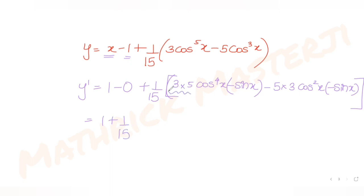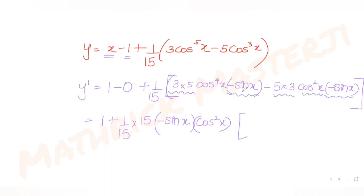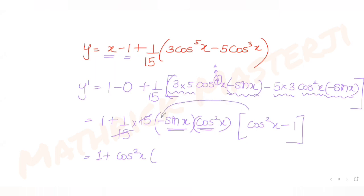Taking 15 common, the 15 cancels with the 1/15. I take out -sin x as a common factor, and also cos²x as a common factor. From the first term, taking cos²x out of cos⁴x leaves cos²x, so the bracket becomes cos²x - 1. This gives y' = 1 + (-sin x)(cos²x)(cos²x - 1).